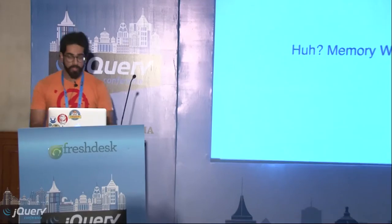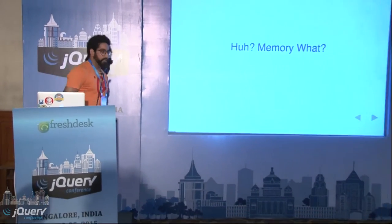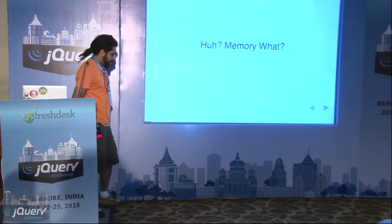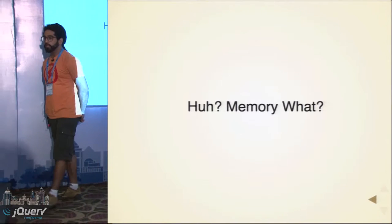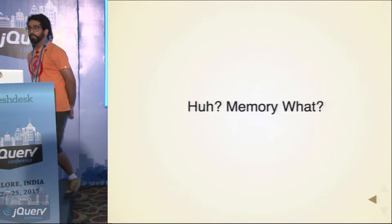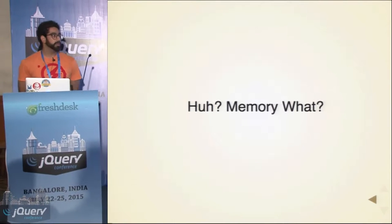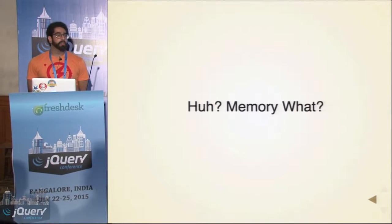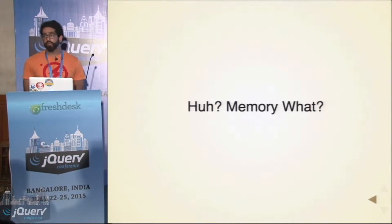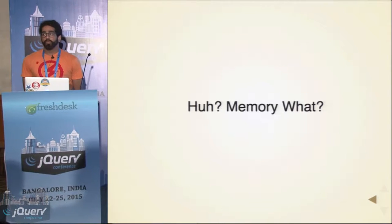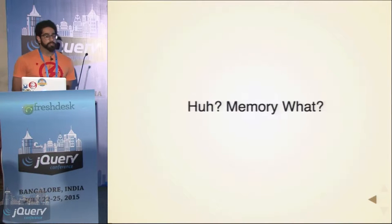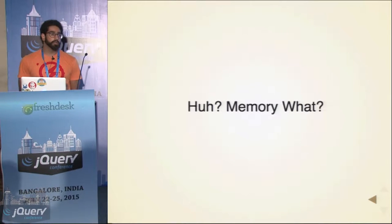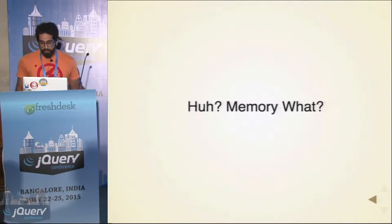So what are memory leaks? The memory life cycle for pretty much most programming languages is quite similar. You allocate some memory, get some job done, compute, calculate, and when you're done you release that memory so you can do something else. You typically have a leak when you're unable to release that memory, and so it kind of clogs, accumulates, and you eventually have a hang and a crash.